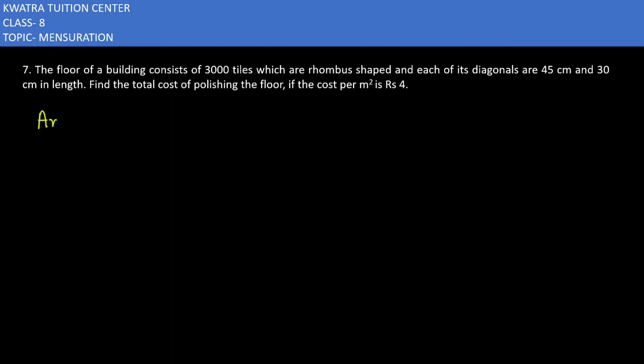Area of tile is basically covered by 3000 tiles. We need to find the area of one tile, which will be equal to the area of rhombus because it is a type of quadrilateral. So what you have to do is take half d1 into d2. It will be half into 45 into 30. 2 and 30 will be cancelled, it will give you 15. 45 into 15 is 675 centimeter square.